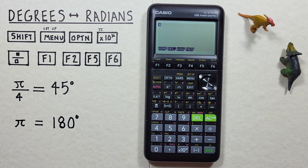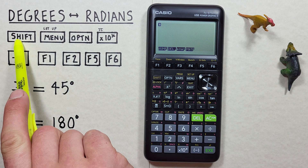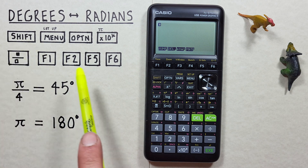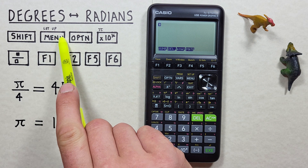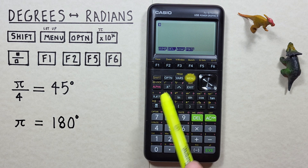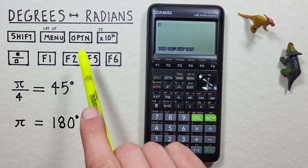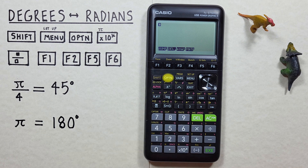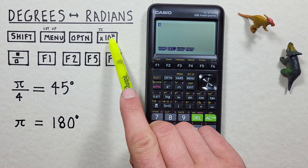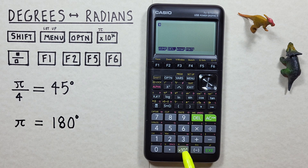To do this, we'll use the shift key that looks like this, located here. The menu setup key that looks like this, located here. The option key that looks like this, located here. The x10 to the x key, with the shift function of pi, that looks like this, located down here.